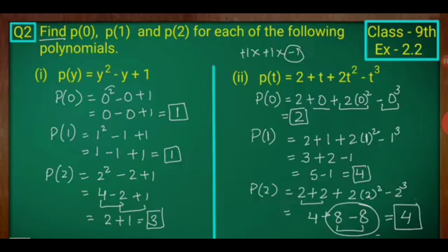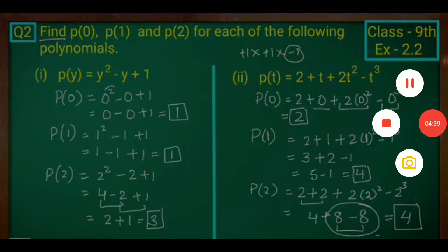Similarly, we find p(2): 2 plus 2 plus 2 times 2 squared minus 2 cubed. 2 squared is 4, so 2 times 4 is 8. 2 cubed is 8. So we have 4 plus 8 minus 8, where the plus 8 and minus 8 cancel out, leaving 4. So p(2) equals 4. The next part we will do in the next video. I hope the concept is clear — it is a very easy concept.